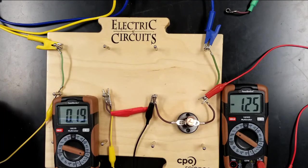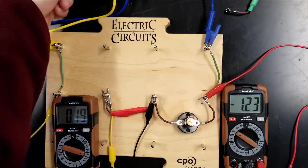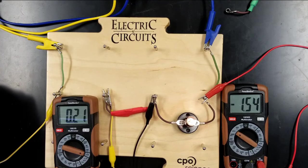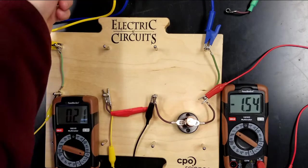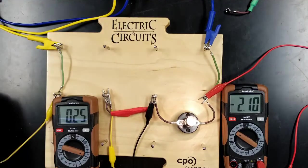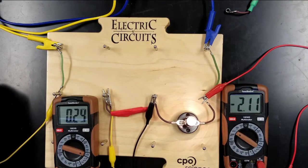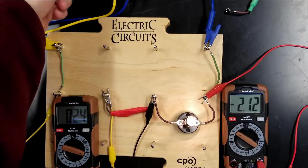So 1.25 volts, 0.19 amps. 1.54 and 0.21 amps. 2.1 volts and 0.25 amperes.